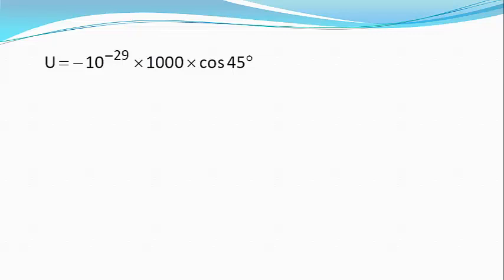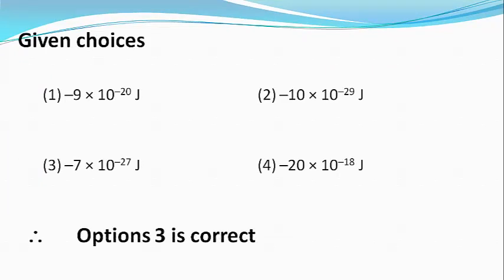which on simplification gives me U equals minus 7 into 10 raised to power minus 27 joules, and our answer matches with choice 3. Choice 3 is the right answer.